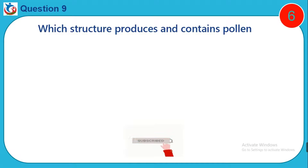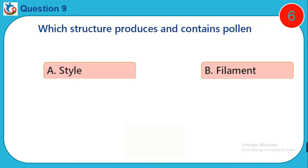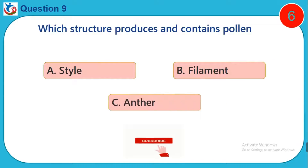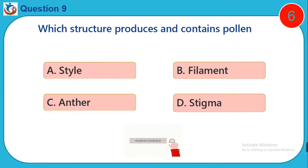Question 9. Which structure produces and contains pollen? A. Stamen. B. Filament. C. Anther. D. Stigma.